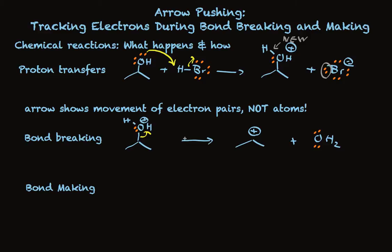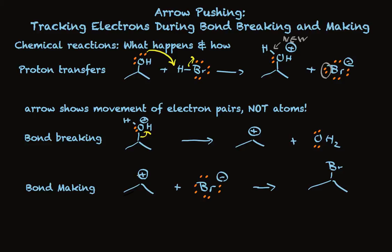Bond making processes are also easily analyzed and tracked using the same convention. When that carbocation is formed, it has a positive charge on carbon, telling us that this carbon has too few electrons — it needs another electron pair. When we have bromide together with that carbocation, they form a new organic compound, a stable neutral molecule: isopropyl bromide. Bromide has four unshared electron pairs around it and a negative charge. Carbon needs an electron pair and has a positive charge. When a pair of electrons on bromide is used to form a covalent bond with that carbon, we form a stable neutral molecule, and the Arrow Pushing Convention lets us track that exactly.